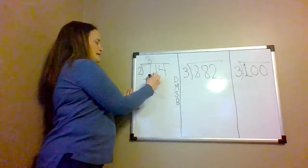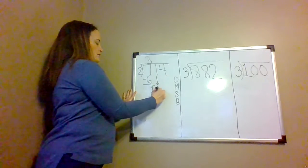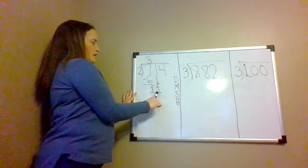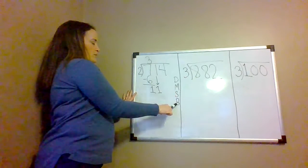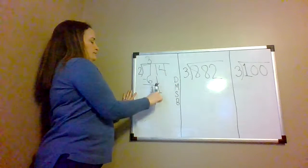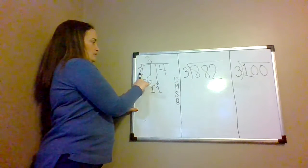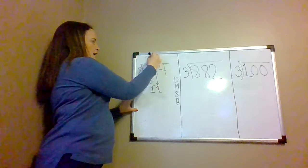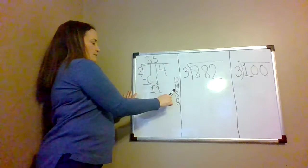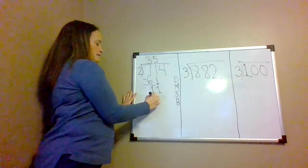Then we bring down. Now we have 11. We go back to the beginning: the next step is divide. 11 divided by 2 is 5. Then we're going to multiply: 5 times 2 is 10.